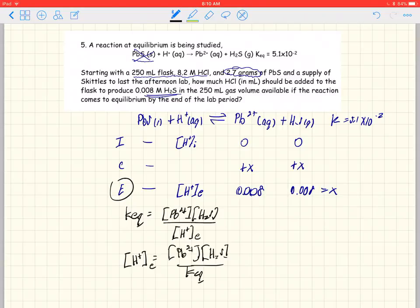And let's go ahead and punch those in and see what we get here. So the H+ at equilibrium is going to be equal to the lead ion concentration times the H2S divided by 5.1 times 10 to the minus 2. Let's punch this into our calculator. And I get a value of, that's at equilibrium,